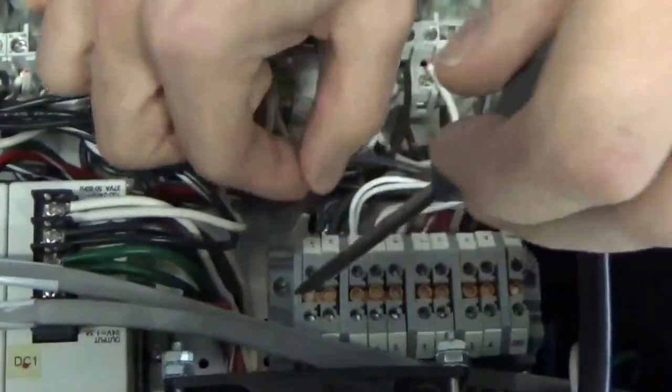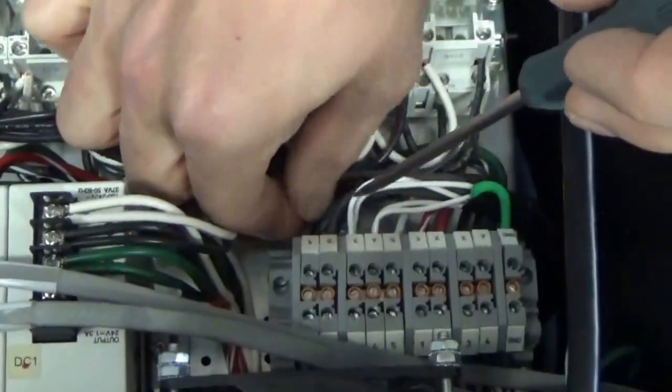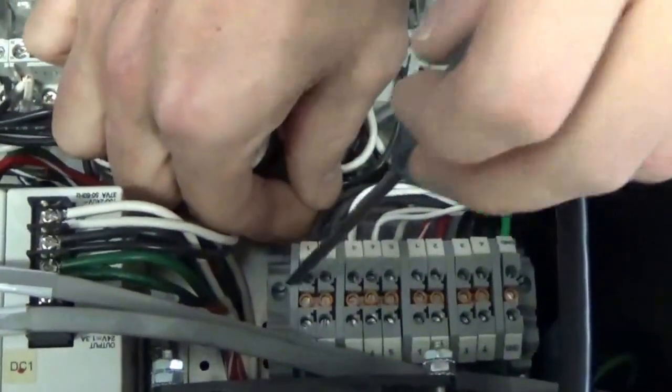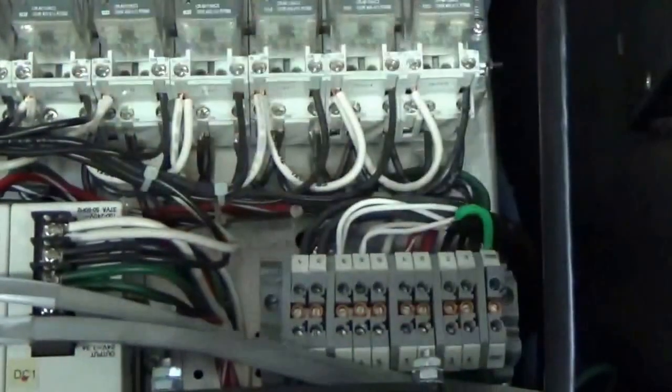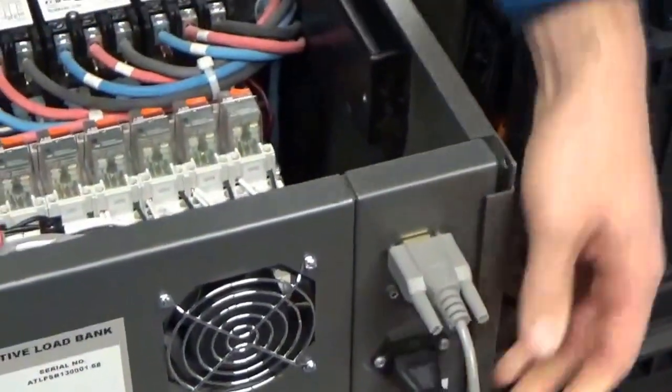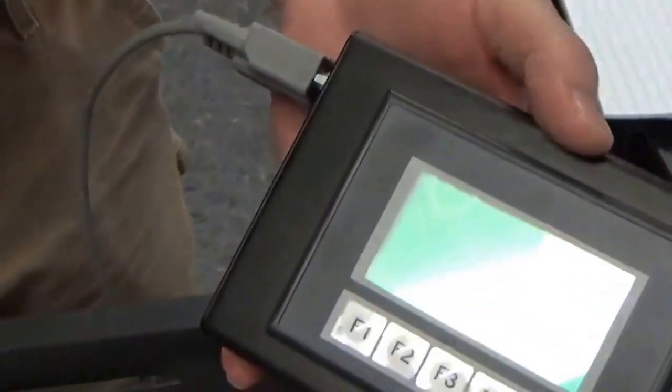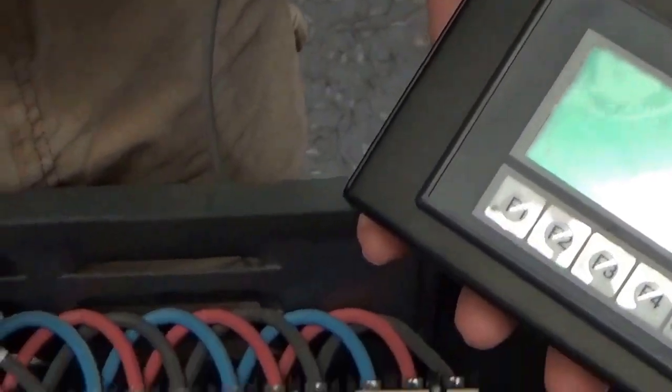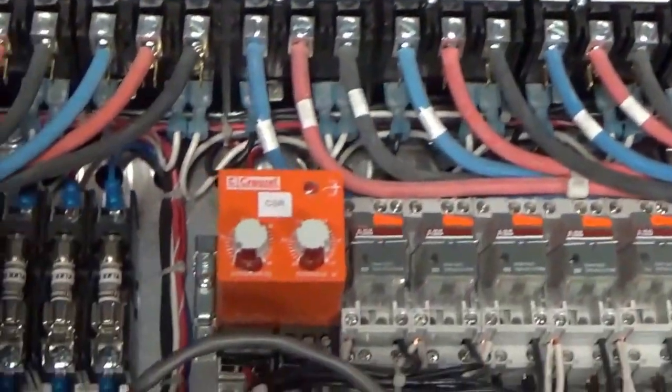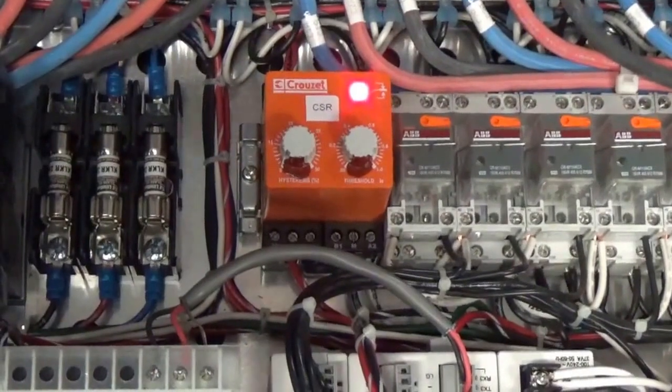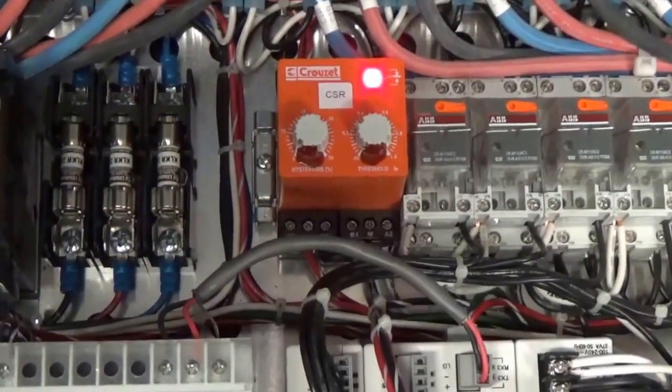We're going to plug our load bank back in. We're going to turn on control power. There we have it. Light's on. I can go to my air screen on the HMI. Cooling fans are okay.